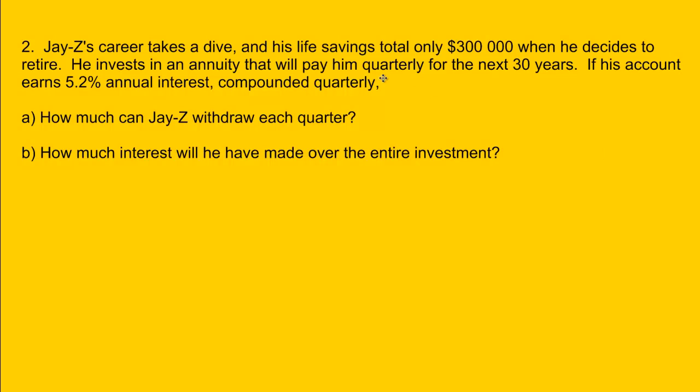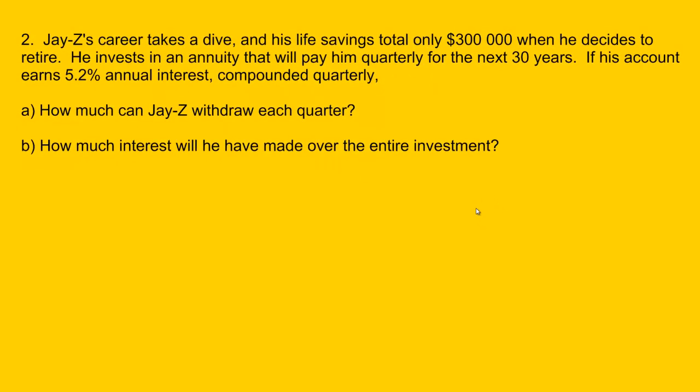Alright, so Jay-Z, who is the Canadian version of Jay-Z, is withdrawing every quarter, which is slightly different than every month, which we've seen before. So let's figure out his interest rate that he's working with first. We have i equals, and then we're going to take the 5.2%, which is 0.052, and divide that by 4. And this is going to equal 0.013. I just did that in my head: 52 and a half is 26, 26 and a half is 13.